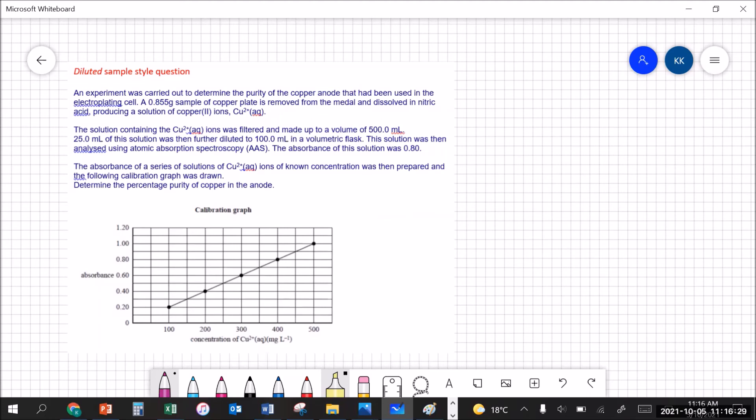This solution was then run through the atomic absorption spectrometer and its absorbance was found to be 0.80. The absorbance of a series of copper ion solutions of known concentration was prepared. There's our standards and the following calibration graph was drawn. That's nice they're going to give us the calibration graph. Your task is to determine the percentage purity of copper in that anode.